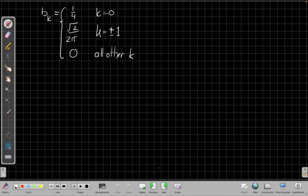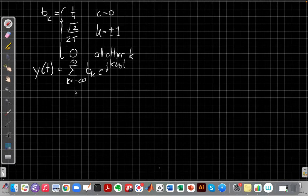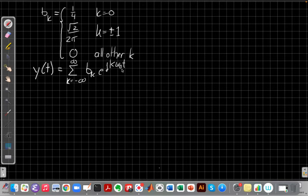...to find the output signal now that we have the b_k's. And we do this using the Fourier series synthesis equation. That equation says that the output y(t) is equal to the sum as k goes from minus infinity to plus infinity of b_k e^(jkω₀t). Now I'm just going to plug in these b_k's I found to this sum for each value of k going from minus infinity to plus infinity.